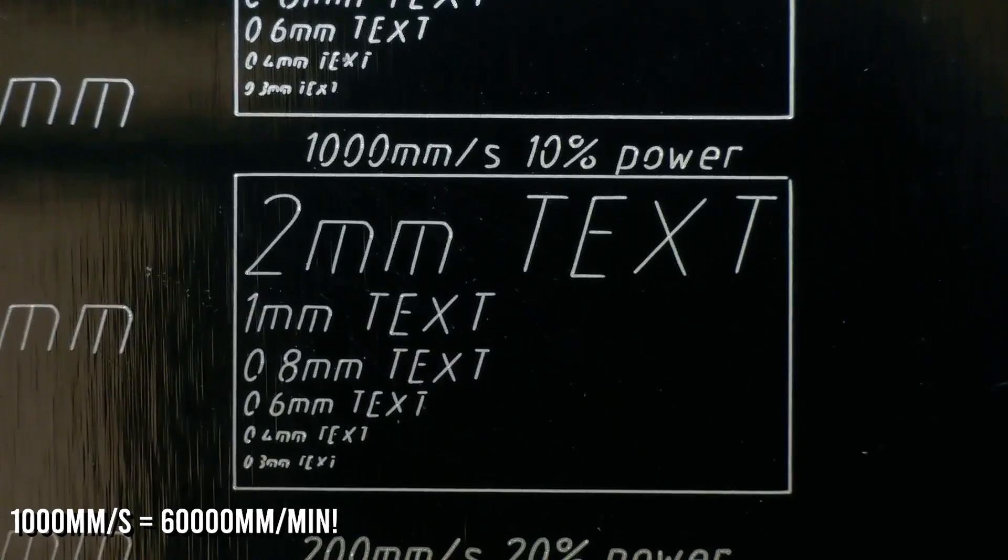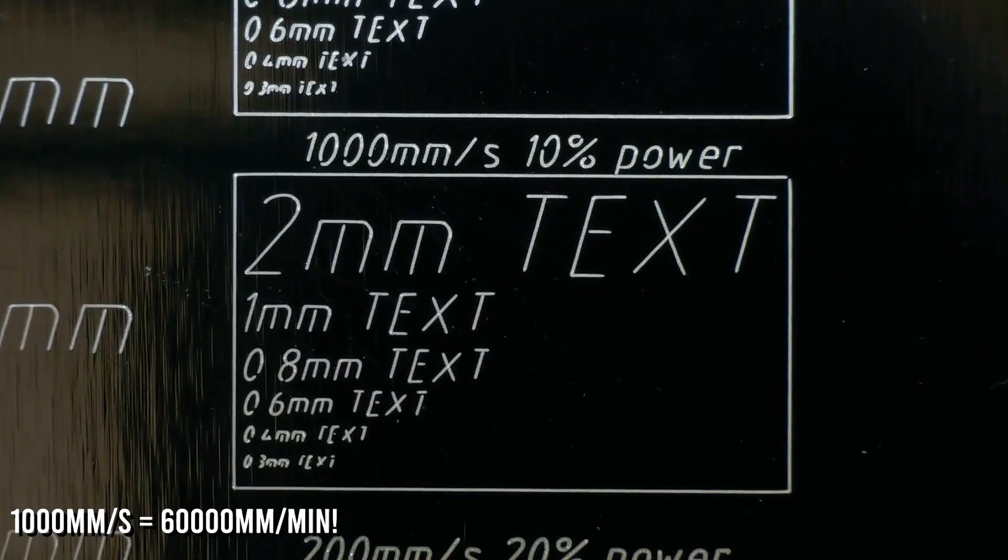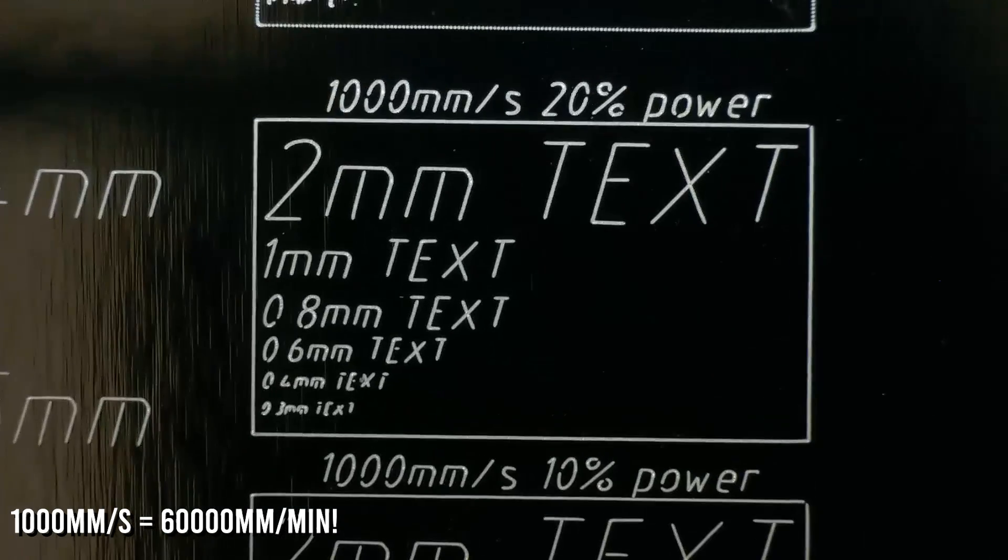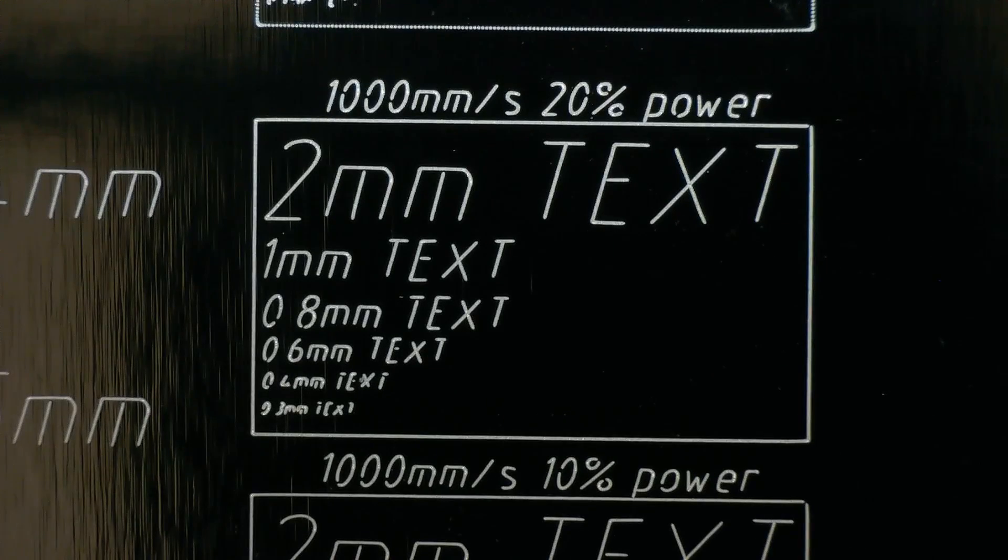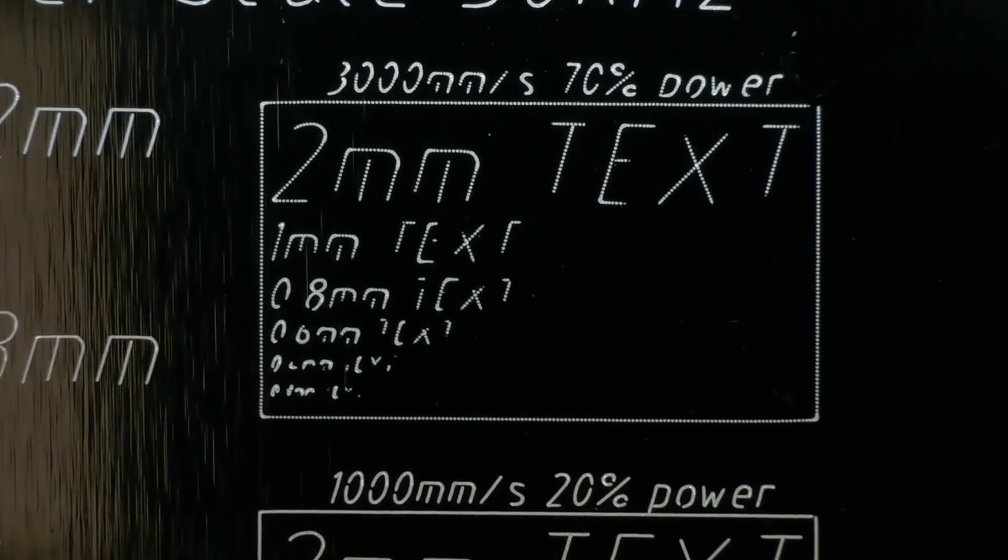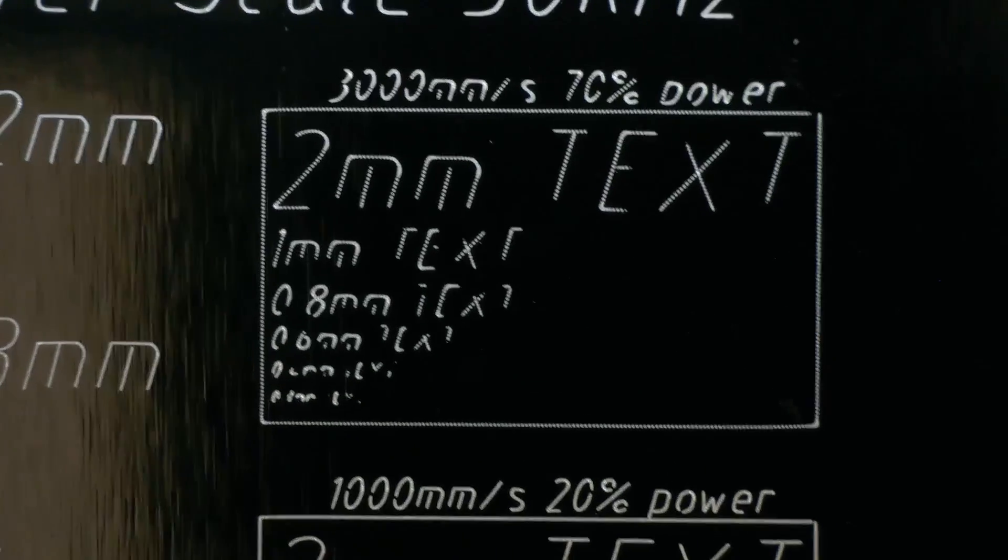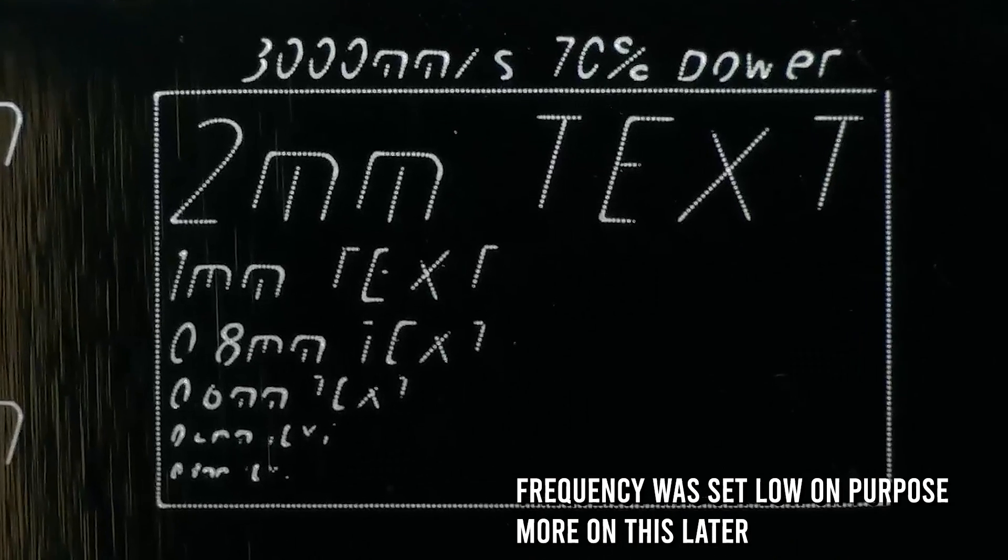At 1000 mm per second it starts to lose some of the precision which is expected. This is a very high speed for such small movements. At 3000 mm per second it loses even more precision, but here you can see the effect of the frequency parameter.